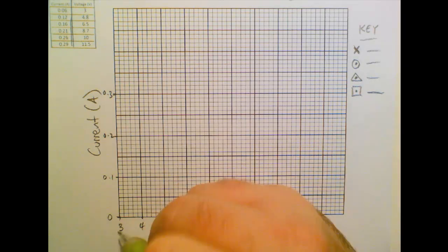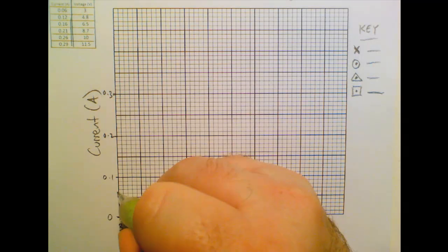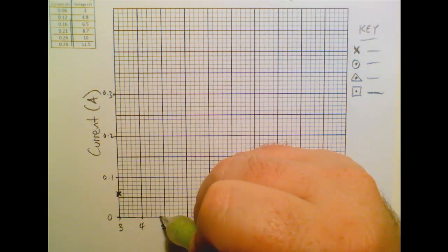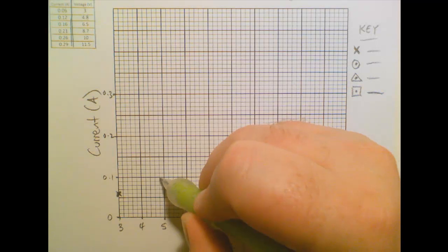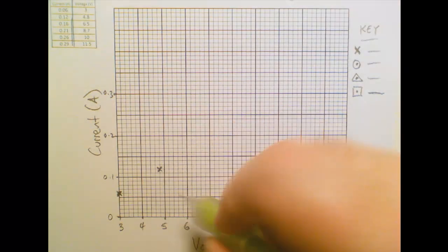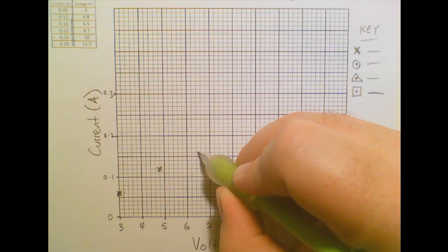So I'll start with a voltage of 3, and I've got 0.06. So this is 0.01, 2, 3, 4, 5, 6, and 3. So I'm going to use crosses for the data points here. And then, what have I got? 4.8, and I come up from 4.8 to 0.12. So that should be there. And 6.5 is in the middle here. 0.16 is there.